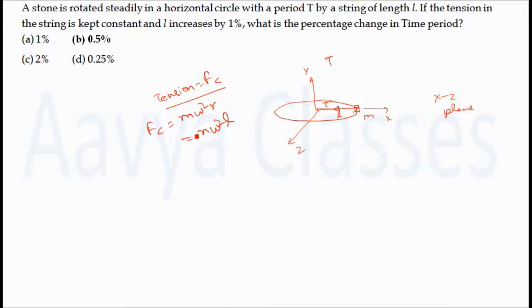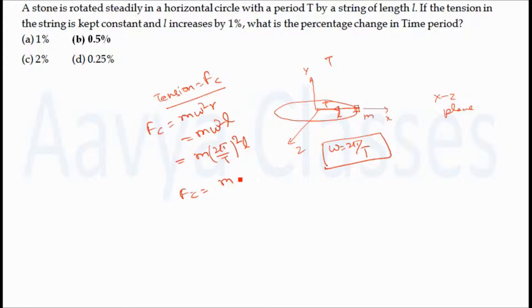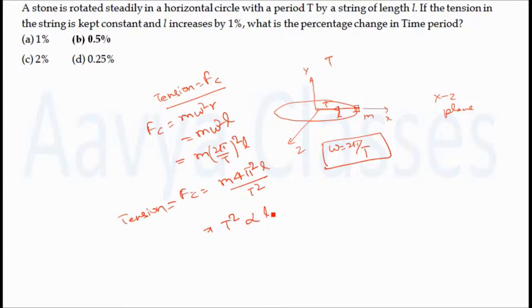Now, we have to calculate the percentage change in time period, so the formula should be written in terms of time period. Since ω = 2π/T, substituting gives Fc = M·4π²·L / T², which equals the tension in the string. So tension = M·4π²·L / T². Now, if we increase the length of the string without changing the tension, then with mass M and 4π² remaining constant, we can write T² is directly proportional to L, or T is directly proportional to L^(1/2).